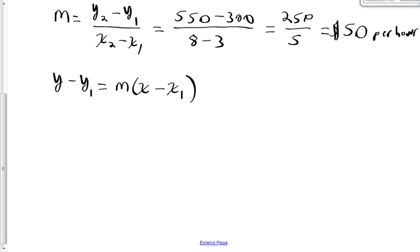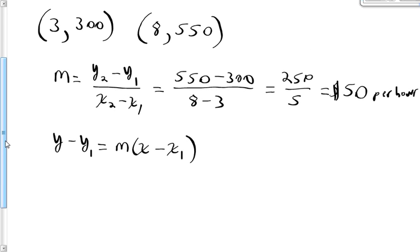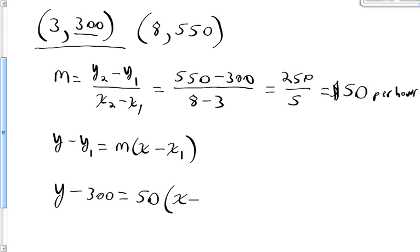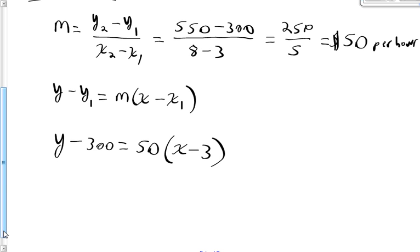Let's plug everything in. I'll work with the ordered pair (3, 300): y minus 300 = 50 times (x minus 3). We could use either point and get the same equation. Distributing gives y minus 300 = 50x minus 150.